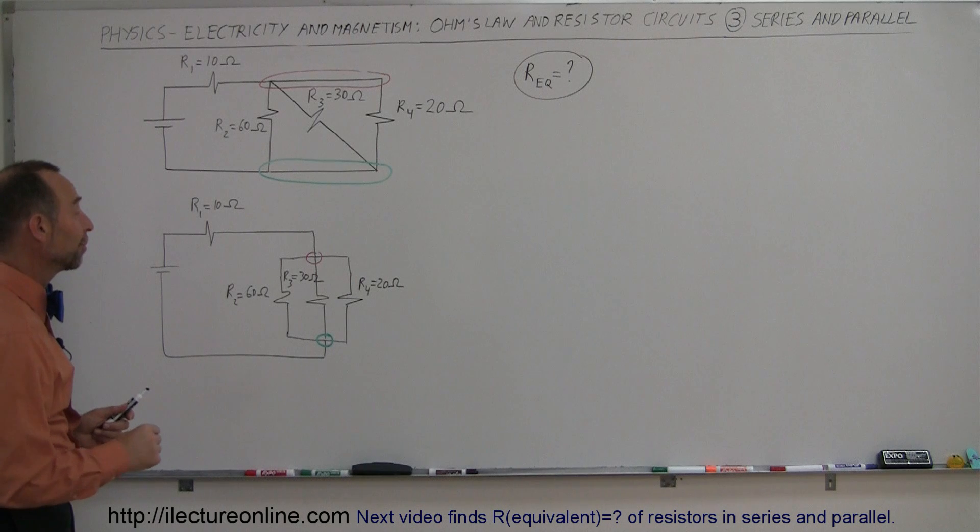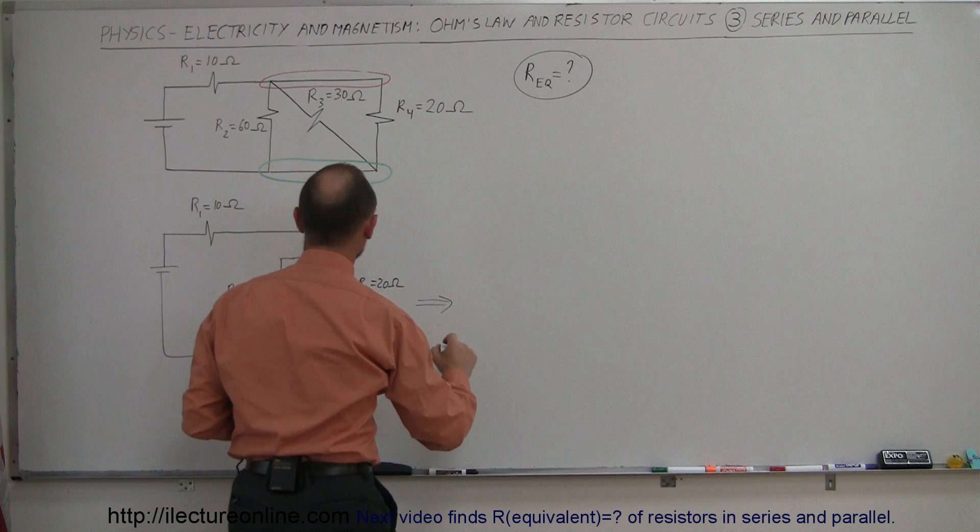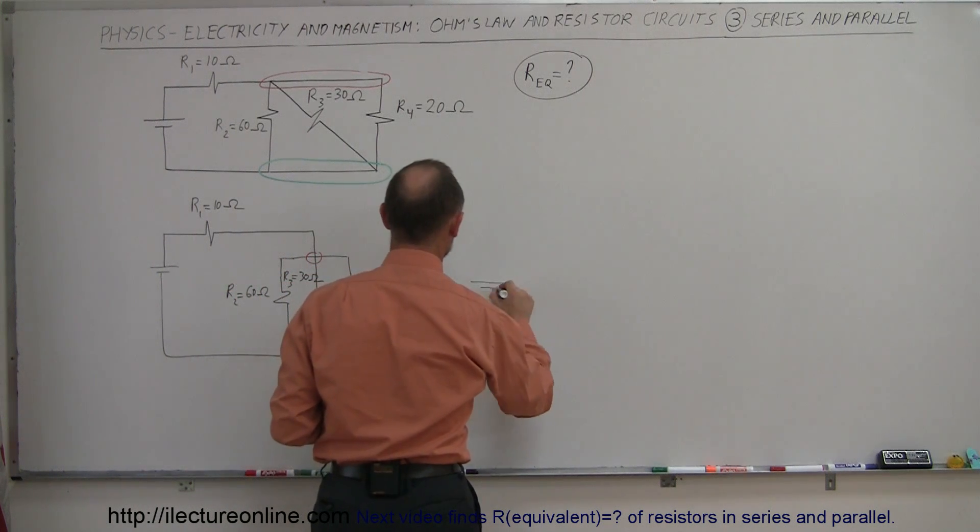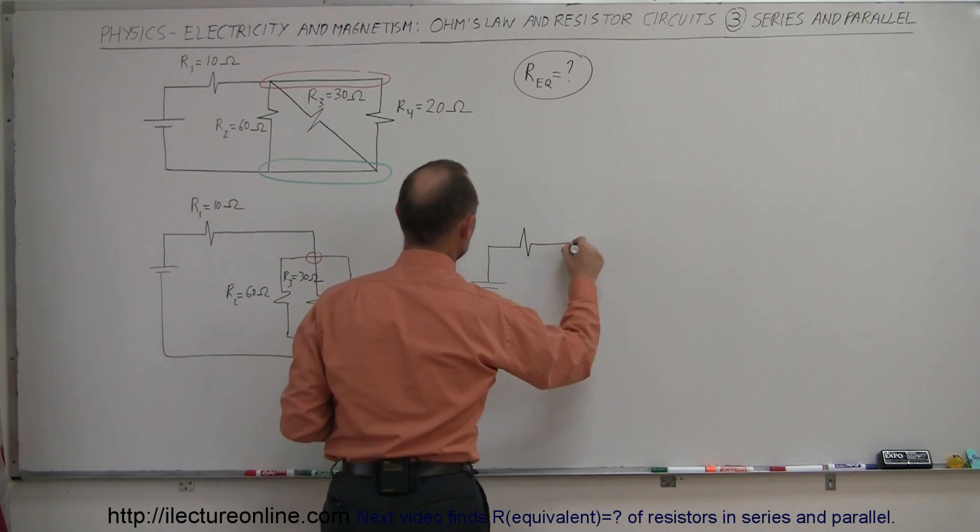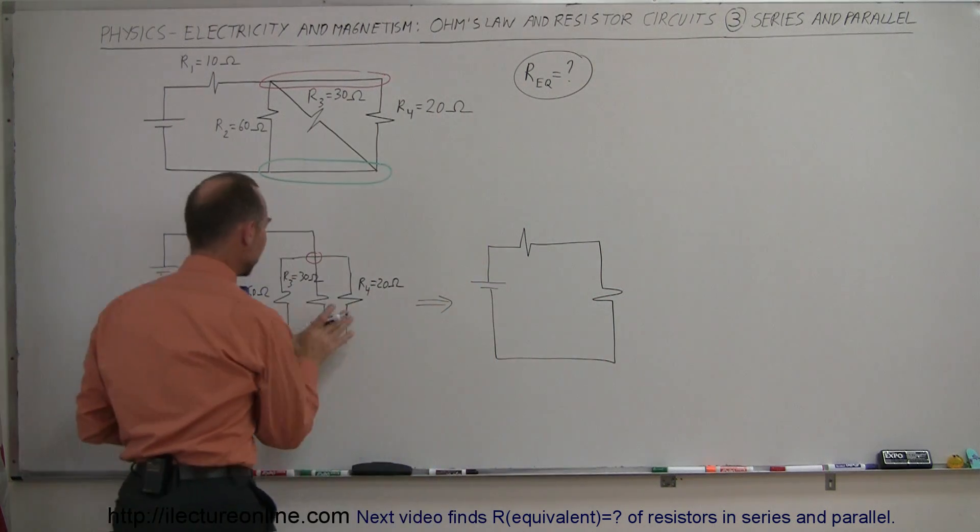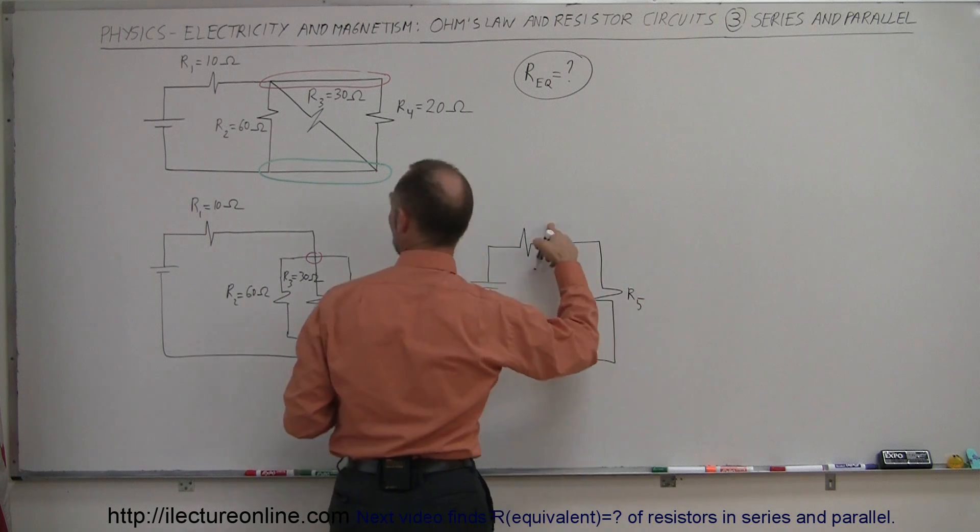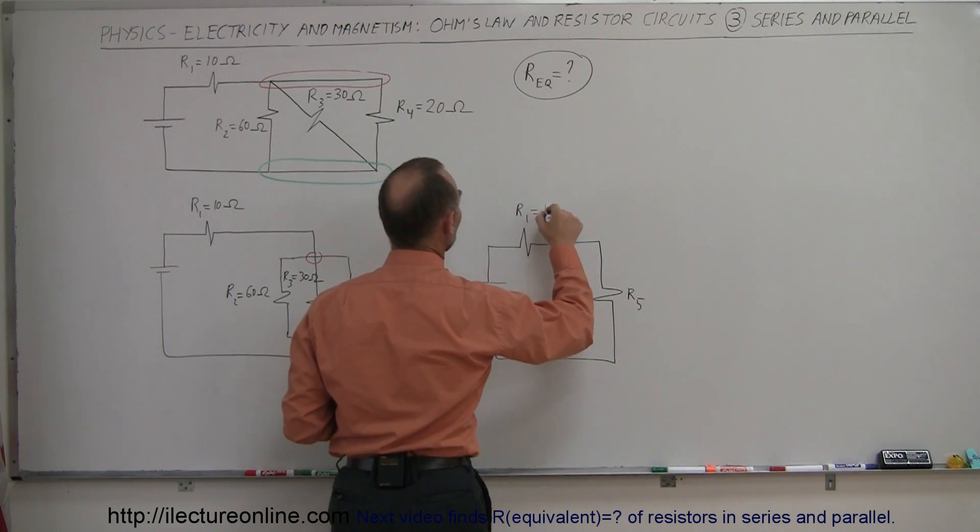Now we can go ahead and simplify it. So the first thing we're going to do is combine these three. We're going to call that equivalent resistance for those three. So we have the battery, we have the resistor there, and a single equivalent resistor that now is going to replace these three. So let's call that resistor 5. And this will still be resistor 1, which is 10 ohms.